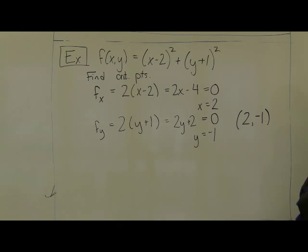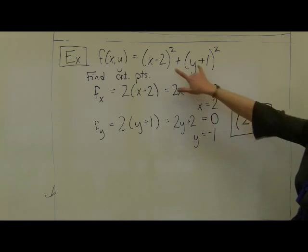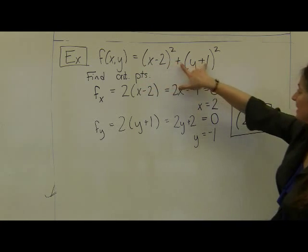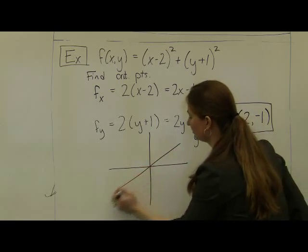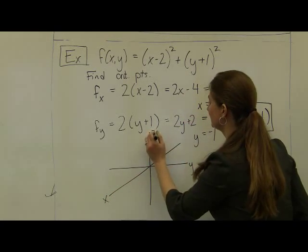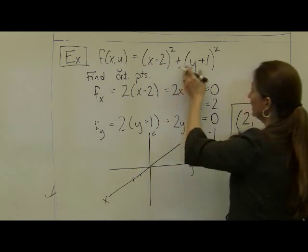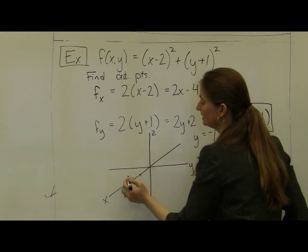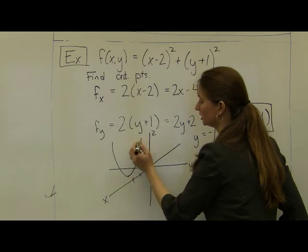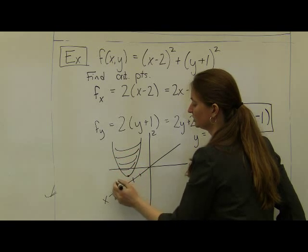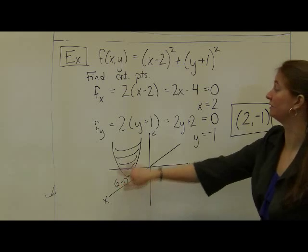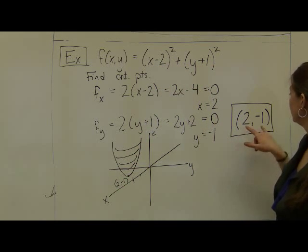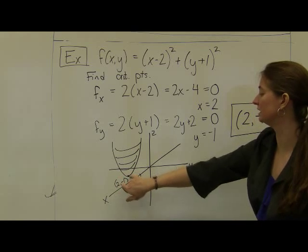Let's evaluate graphically to determine whether (2, −1) is a max, min, or neither. This function has the basic setup of a paraboloid. The x's have been shifted forward 2 units and the y's pulled back 1 unit, meaning this paraboloid has its base shifted to the point (2, −1). Looking graphically, I can see that (2, −1) is going to be a minimum value.